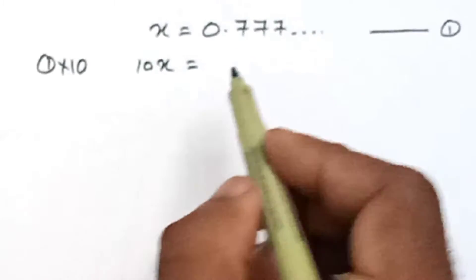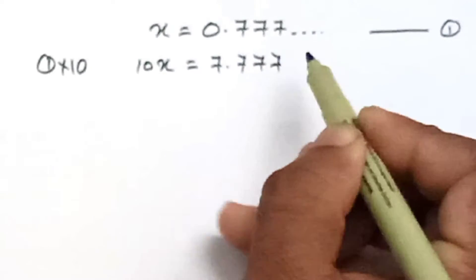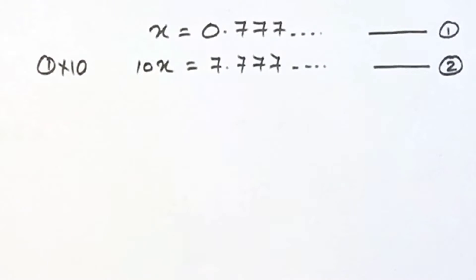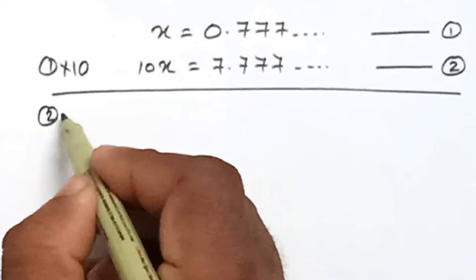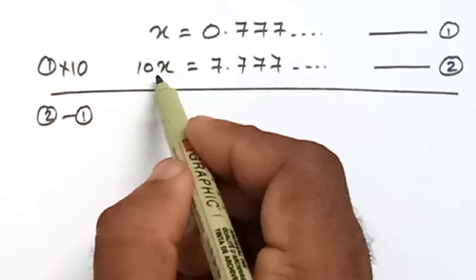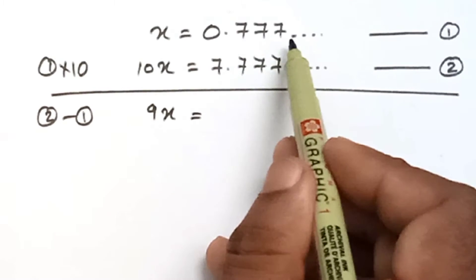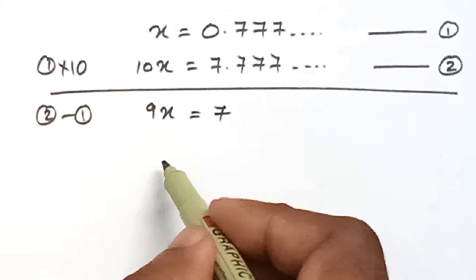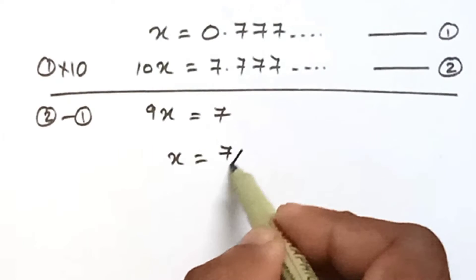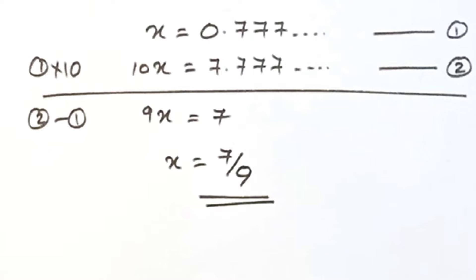So 10x is equal to 7.77... — take this as equation number two. Equation two minus one: 10x minus x is 9x. The decimal parts will get cancelled, and 7 minus 0 is 7. That is, x is equal to 7 by 9. That means 0.77... can be expressed in the form 7 by 9.